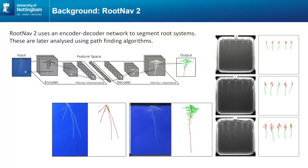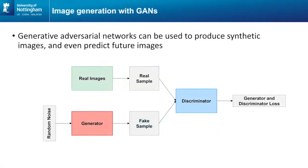This work is really an extension of RouteNav2. Given that we've got a system that can segment route systems, is there some way we could augment it with temporal information — give it three frames and see if it could predict three frames? That's where we started looking into generative adversarial networks.